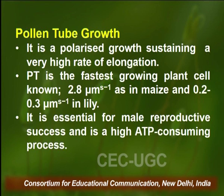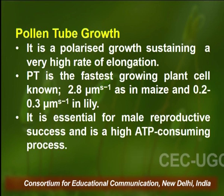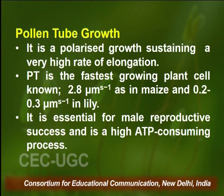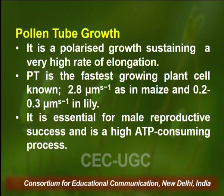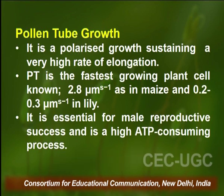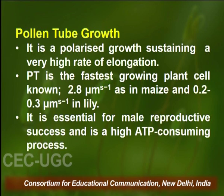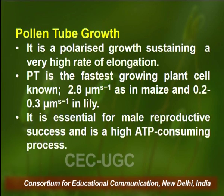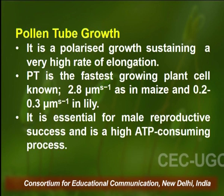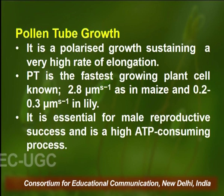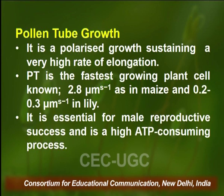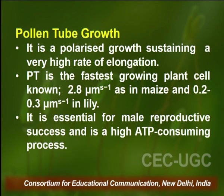The pollen tube grows at a very fast rate. The pollen tube is the fastest growing plant cell known — in maize it grows at 2.8 microns per second, and in lily it is about 0.2 to 0.3 microns per second. It is a polarized growth, sustaining a very high rate of elongation, and it is essential for male reproductive success.